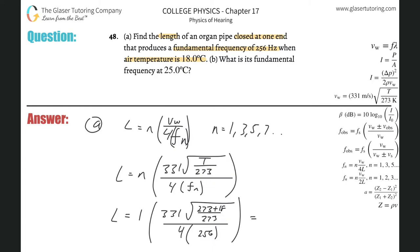Let's just calculate. So 331 multiplied by square root, and then we can do parentheses, 273 plus 18, close those parentheses, divided by 273 all under the radical. And then divide that by 4 times 256.